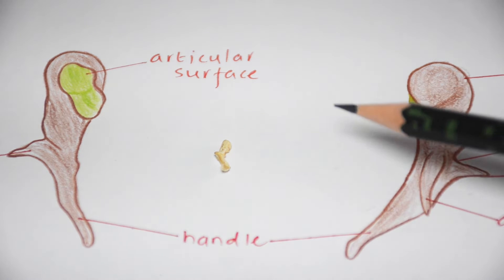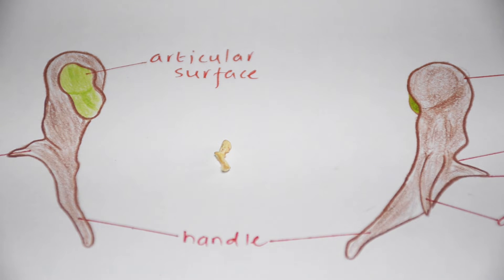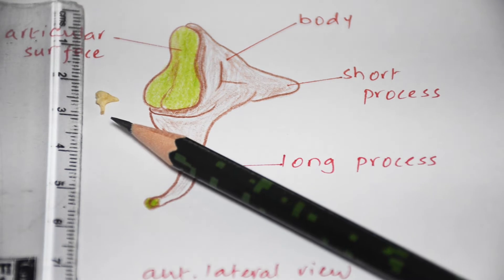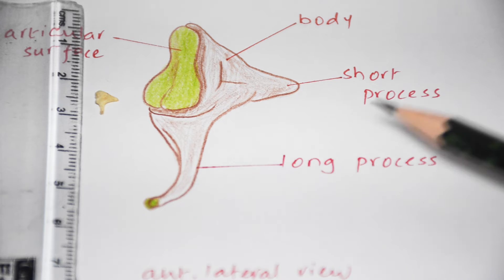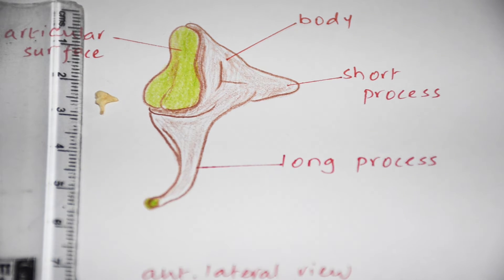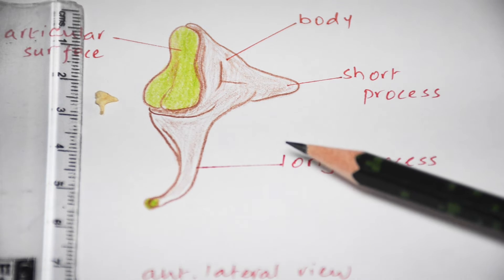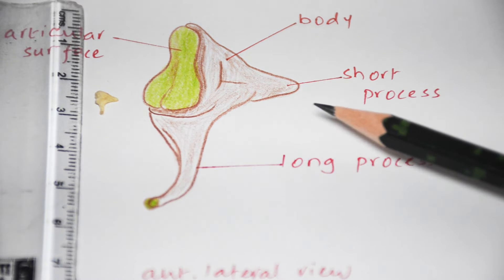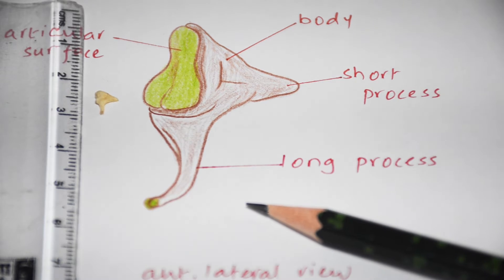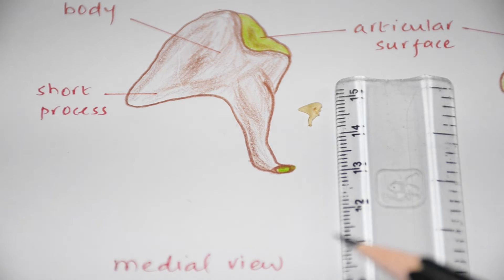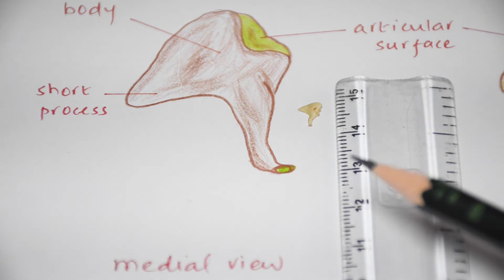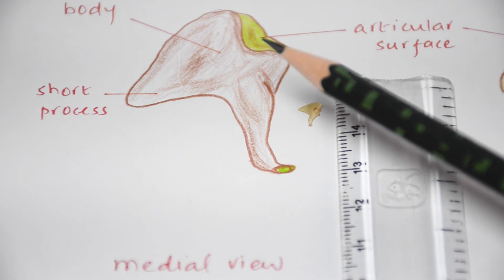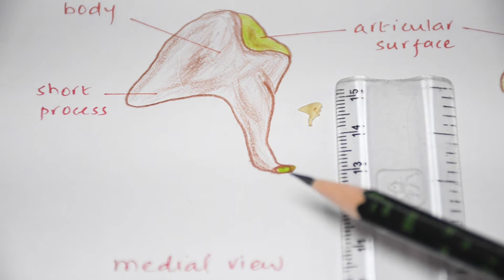The malleus itself is derived from the first pharyngeal arch. Now let's see the incus. This is the left incus — you can correlate its size with the scale. In this diagram showing the anterolateral view of left incus, it resembles the shape of a premolar tooth. It has a body with an articular surface, a short process, and a long process. The medial view similarly shows the body, short process, and long process.